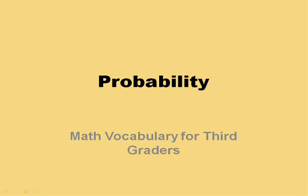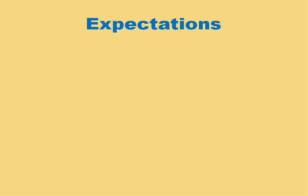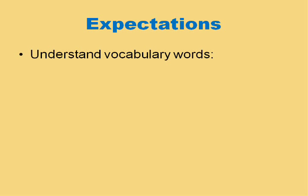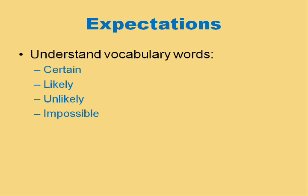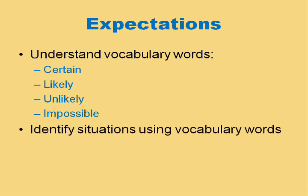This is a short lesson on probability. It focuses on a few vocabulary words associated with probability that are important for third graders to know. By the end of this lesson, you will understand the vocabulary words certain, likely, unlikely, and impossible, and you will be able to identify situations using those vocabulary words.